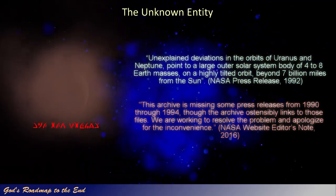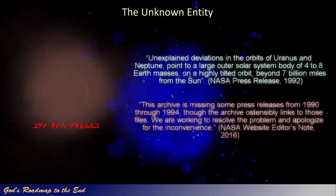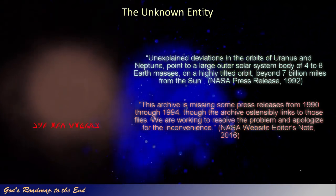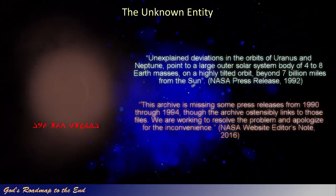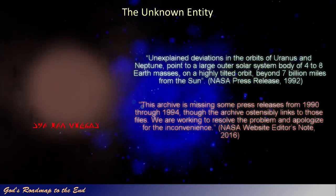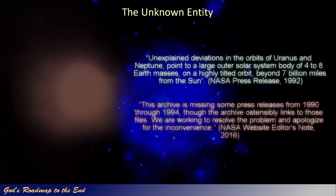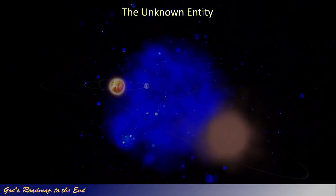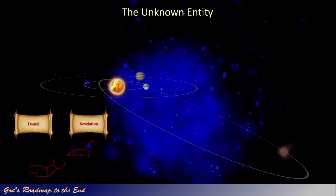NASA has now had more than two decades to resolve this problem and still has not been able to bring back these missing press releases. The lack of information about this object in the mainstream media is certainly telling us a thing or two. It is clear that NASA has removed these articles intentionally to keep this information from the public. But what would be their motive for hiding this information, given that this was once public knowledge? What do they know that they do not want the public to know? Is this because of this object's current trajectory and what it could imply for those living on earth in the years to come? I believe God's word provides this information to us in the prophecy and vision that Daniel was told to seal up.